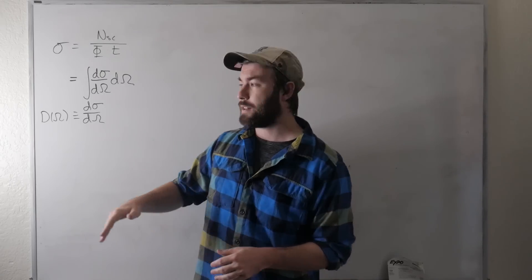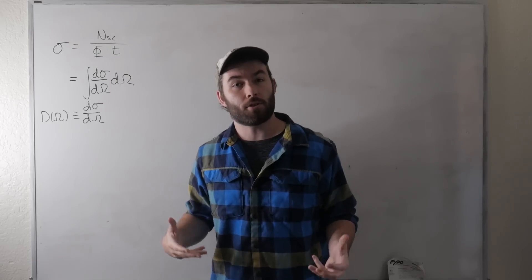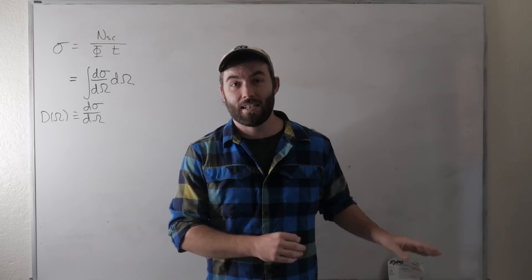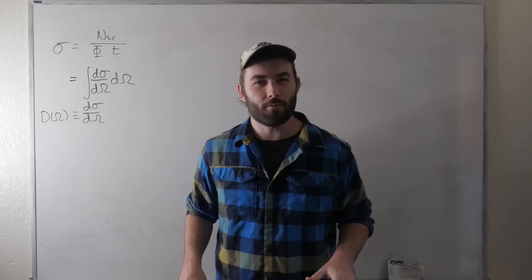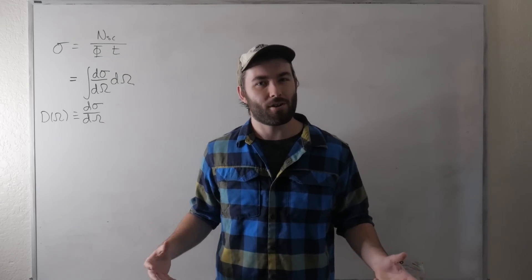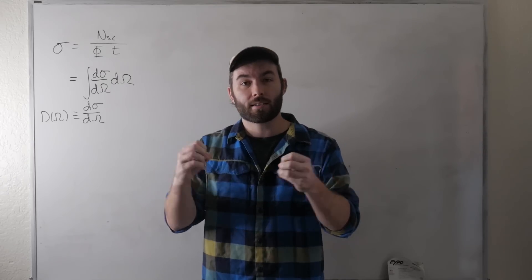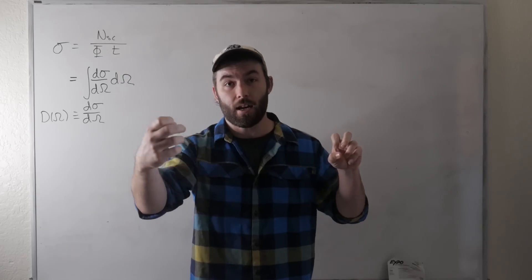We also defined something called the differential cross section which in that same breath is kind of like a description of the shape of the object, the shape of the target. In that last video we stated that that interpretation becomes just absolutely wrong and really not even a very good approximation once we stop thinking of these processes as rigid bodies colliding and start thinking of them in terms of these interactions happening at a distance.